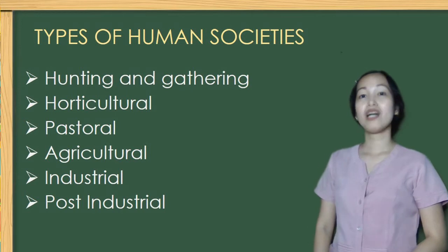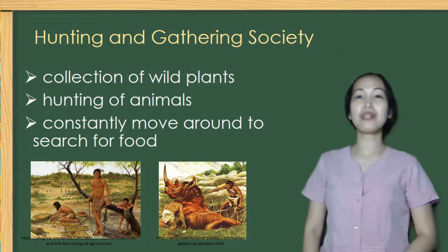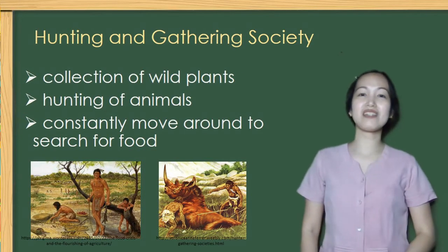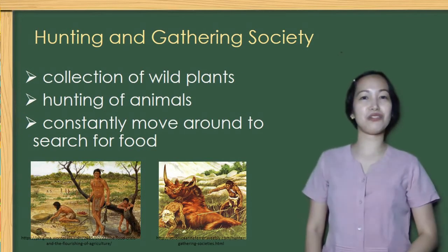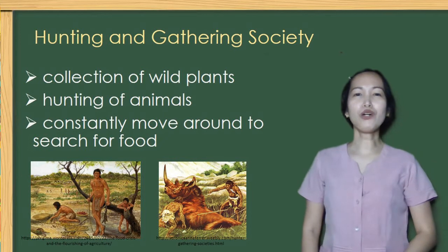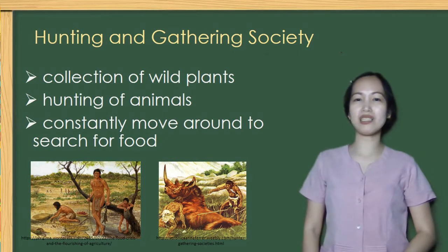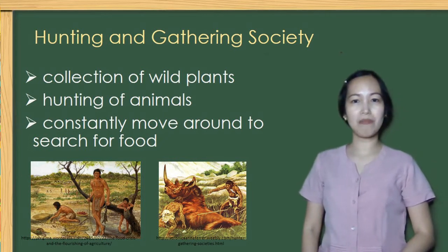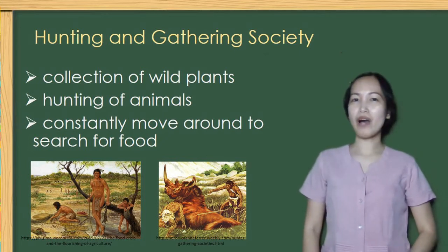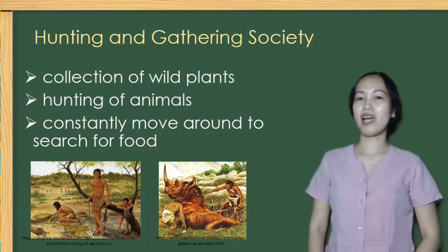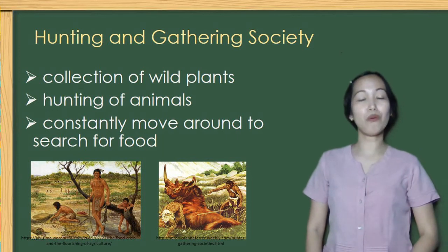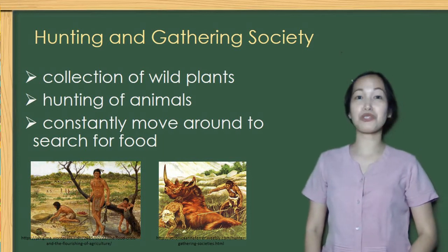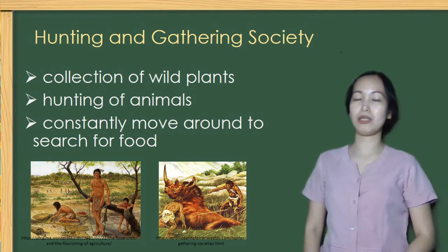The first human society is hunting and gathering society. Their food production involved the collection of wild plants, hunting of animals, and they constantly moved around to search for food.